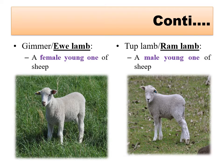By remembering these lamb names you can also remember the adult names: adult female sheep is called a ewe, and adult male sheep is called a ram.